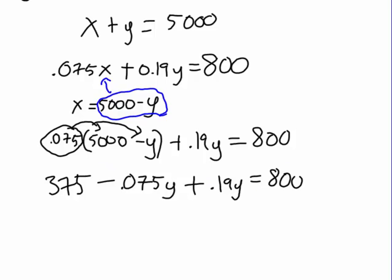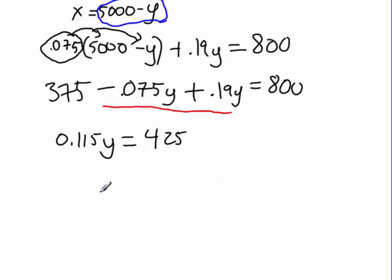And now, I want to combine my like terms here and subtract 375 from both sides. So, 0.19 minus 0.075 gives me 0.115Y equals 425. And divide both sides by 0.115, I get Y equals 3695.65. And I rounded here. I rounded just a little bit.